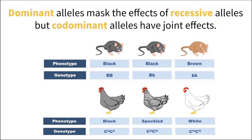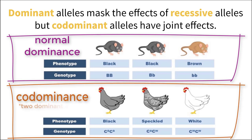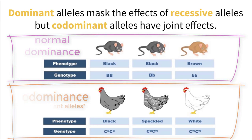While many traits follow the principle of dominance, there are others that are exceptions to this rule. One example is codominance, which is when two alleles of the same trait are both dominant, and when presented together, express both traits to varying degrees. In this image we see codominance in chicken feathering — if the chicken is homozygous for either allele, it is either exclusively black or white. But in the heterozygous form, because both alleles are dominant, the chicken expresses both black and white with a speckled phenotype.